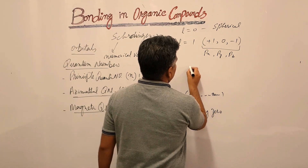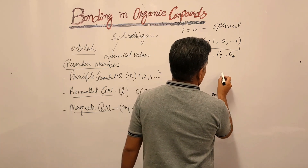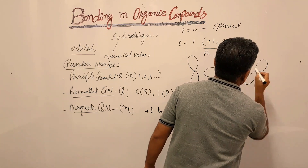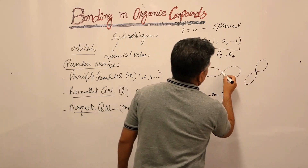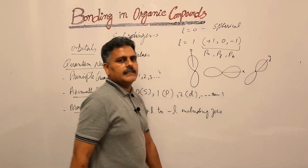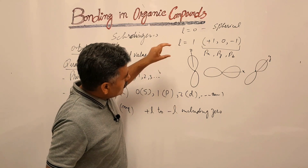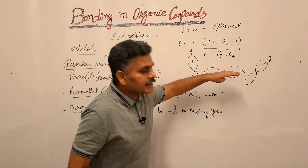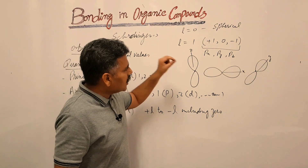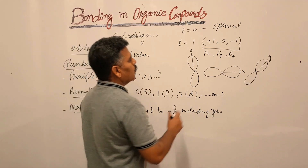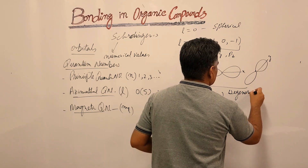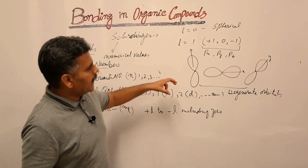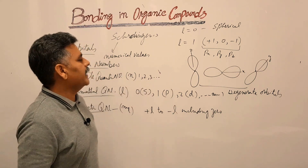The p orbital has three spatial orientations around the nucleus along the x, y, and z axes. These three p orbitals — px, py, and pz — have the same energy, and that is why they are known as degenerate orbitals. For the d orbital, if l equals 2, then the magnetic quantum number gives five orientations for d orbitals.